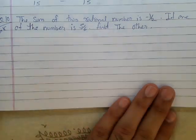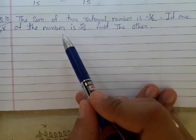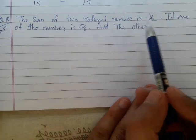Question number 10 from exercise 1c. The sum of two rational numbers is minus 1 upon 2. If one of them is 5 upon 6, find the other.